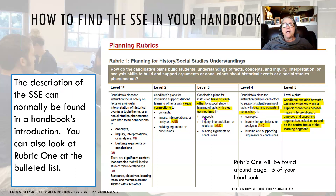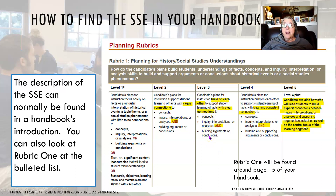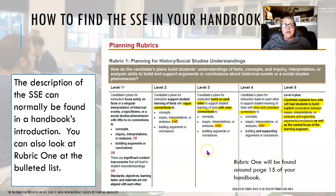Here's an example taken from the secondary Ed history handbook. You can see this bulleted list on rubric one — we've got concepts, inquiry, interpretations or analysis, and building arguments and conclusions. In my videos, whenever I refer to the first SSE, the second, and the third, those are what I mean. Some of you don't have three, but that's the framework. If you go and look on rubric one, it's usually around page 13 to 15 of your own handbook.